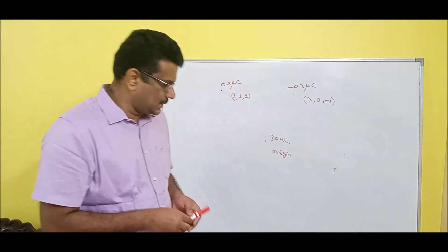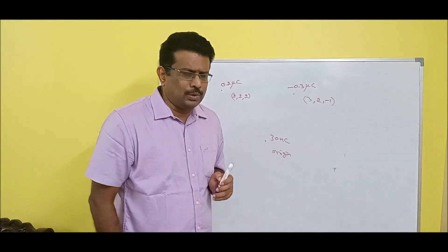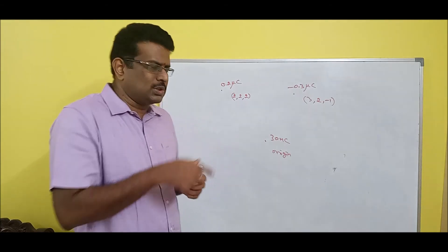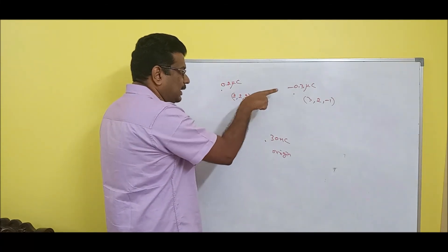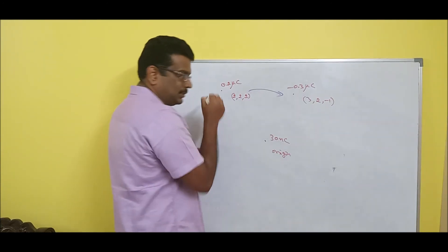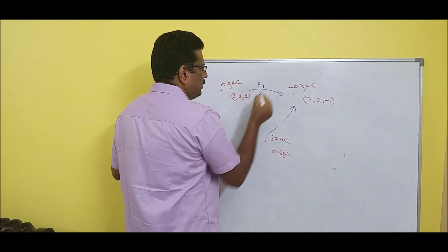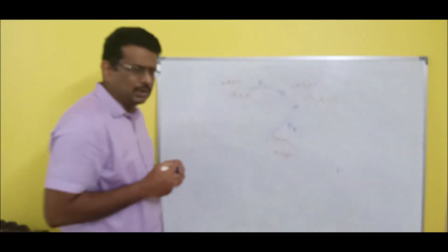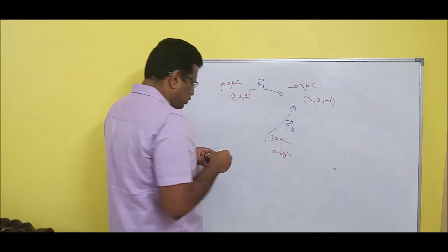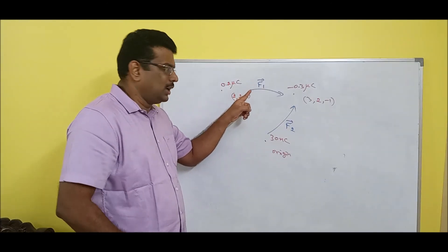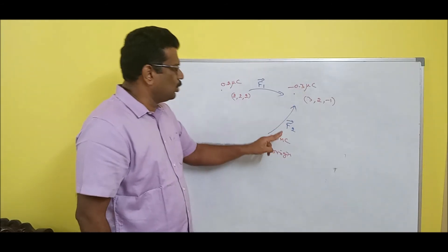I have given three charges — very simple problem. I am going to give a small introduction. Where is the negative charge? This one is positive, this is positive, this is negative. So force on the negative charge due to this particular charge and this particular charge. Let us say this force is F1 and this force is F2. First find the unit vector A to B (B minus A), then do the same calculation as previously.